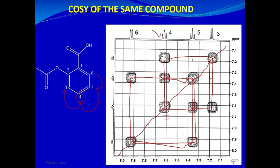This is quite different from the TOCSY spectrum. In COSY we only see vicinal couplings, but in TOCSY you can see all the protons present in a spin system. This makes TOCSY very useful for carbohydrates, glycosides, and related molecules. We'll come up with another two-dimensional NMR technique next time.